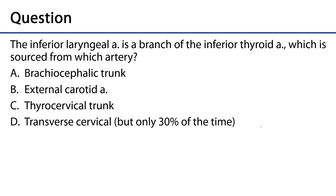The assessment question for the video: the inferior laryngeal artery is a branch of the inferior thyroid artery, which is sourced from which artery? Brachiocephalic trunk — that seems too general. External carotid — that's the superior thyroid, so that's wrong. Thyrocervical trunk — yes, the inferior thyroid artery is a branch of the thyrocervical trunk, so that's correct. Transverse cervical artery — only 30% of the time, so that's a distractor. The correct answer is thyrocervical trunk.